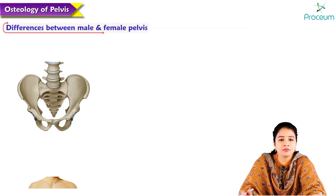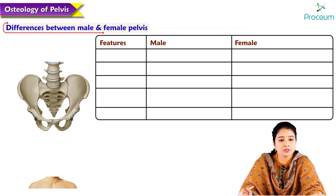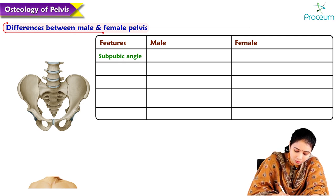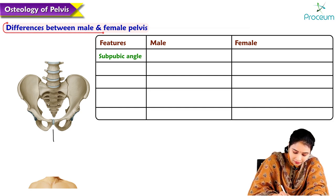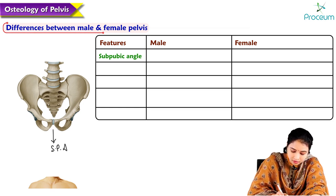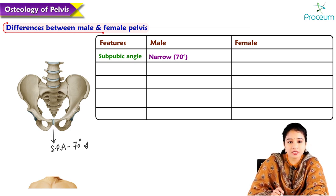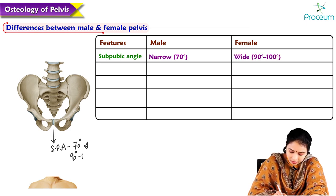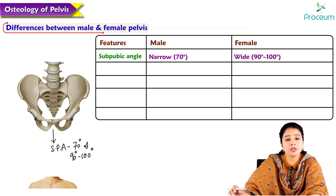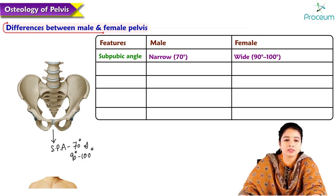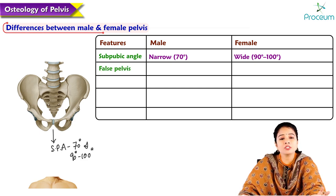The important features differentiating male and female pelvis include the subpubic angle — the angle below the pubic symphysis where the two inferior rami of the pubis converge. The subpubic angle is around 70 degrees in males and around 90 to 100 degrees in females, making it wider in females.